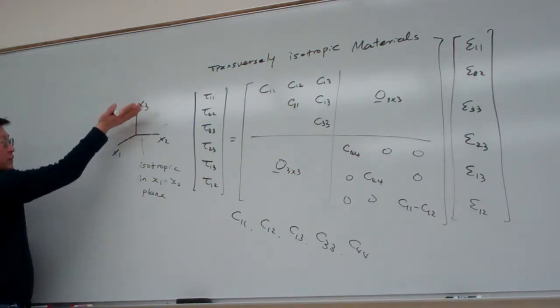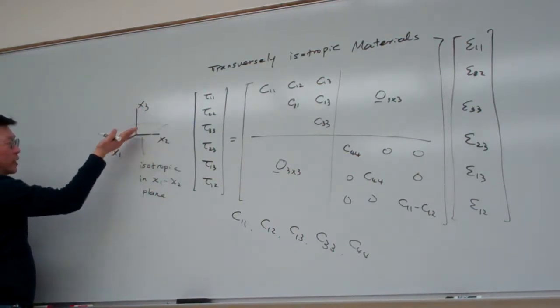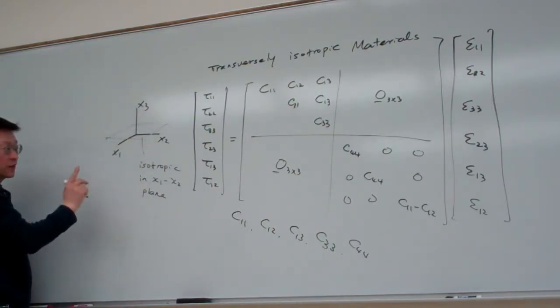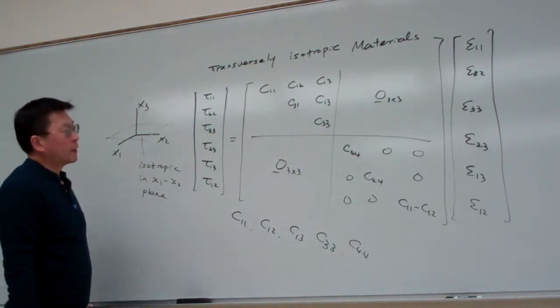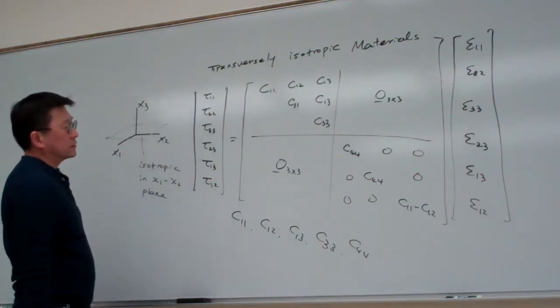So that we call it transverse. Transverse, that means the material remains as isotropic only in X1, X2 direction. But once you transverse in X3 direction, then that thing's changed. So that is the context here.